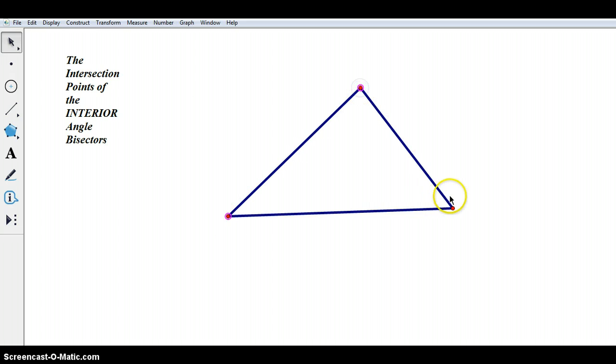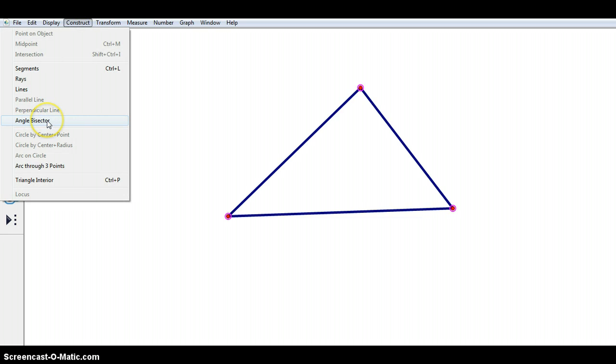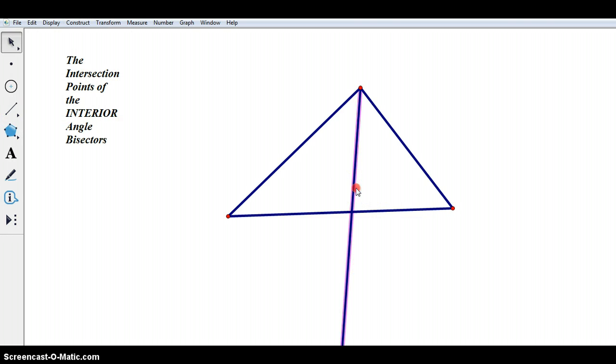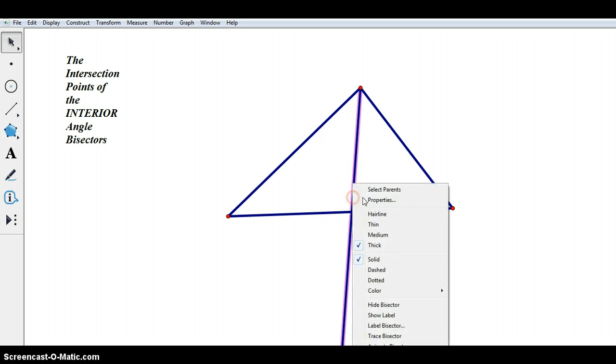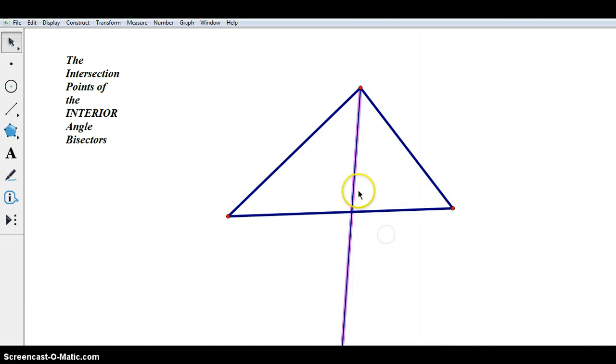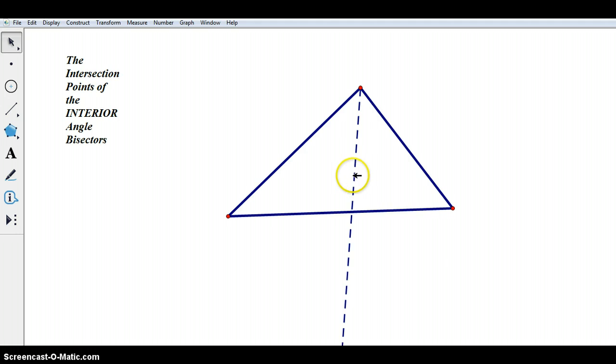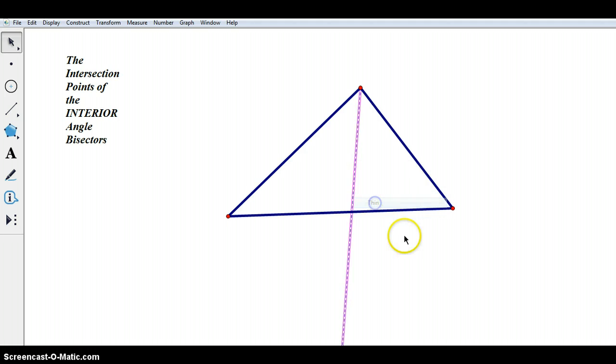Now GSP does this very nicely. If you select three points, it constructs the angle bisector for the middle angle. There we go. Let's just make that medium and dashed. Maybe thin actually. Super.